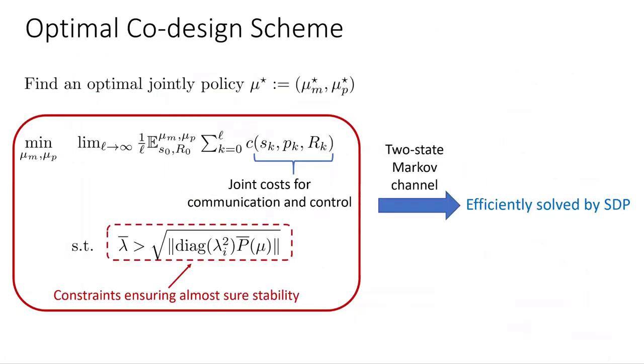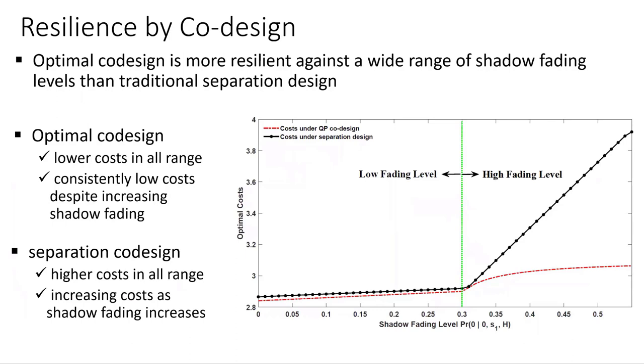In this paper, we address such conflicting interests by developing a co-design scheme that exploits the correlation between these two systems to generate optimal transmission power and control policies that ensure both stability and operational efficiency. The co-design scheme is formulated as a constrained optimization problem that minimizes joint cost for communication and control while respecting system stability. In the paper, we show that the optimization problem can be efficiently solved by a semi-definite program if a two-state Markov channel is considered. We compare our co-design approach against traditional separation design method where the communication and control costs are minimized separately. As you can see from the plot, the proposed co-design approach generates the lowest cost compared to the separation design for a wide range of fading levels. In particular, the co-design method still generates very low cost even in the high fading region in which the separation method generates linearly increasing costs. These results clearly show that the co-design method leads to a more resilient system in challenging industrial environment than the traditional separation method. Thank you for your time and please visit our interactive poster session for more details about our paper.